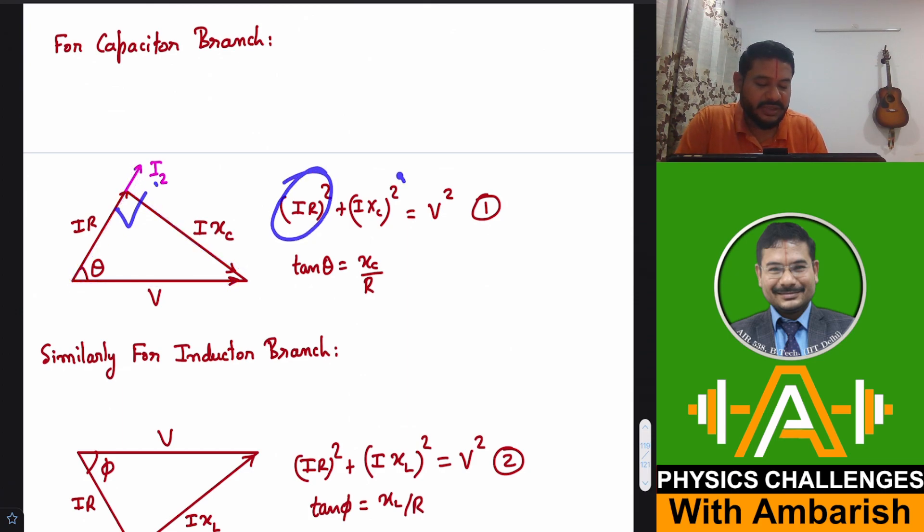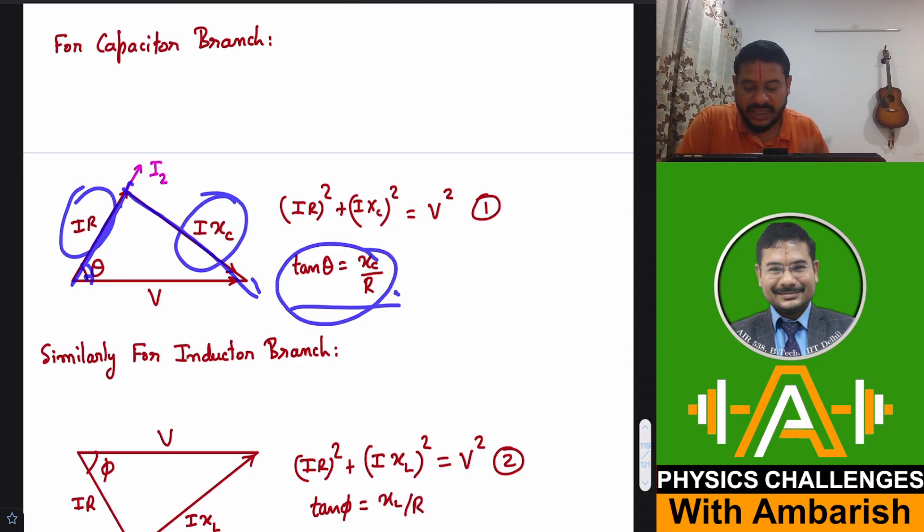So what does that give? Pythagoras theorem gives you IR square plus I XC square is V square. That's equation one. And of course, tan theta, if you want to find out, it is nothing but XC upon R. That is I XC upon IR. That's your tan theta.